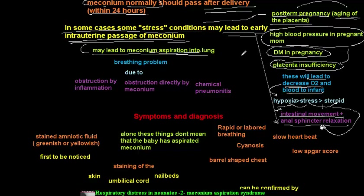The early released meconium mixes with the amniotic fluid, staining it. The infant then breathes this amniotic fluid and meconium mixture, causing aspiration and breathing problems.